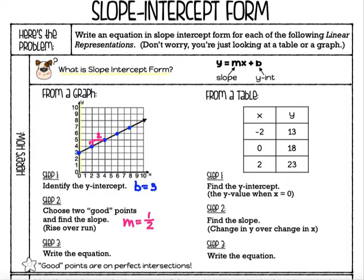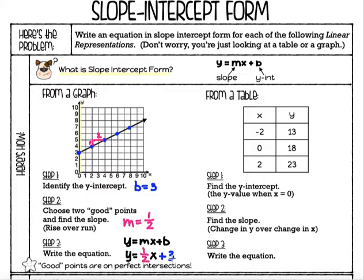The last thing we do is write the equation. We always start with y equals mx plus b. All we're going to do is substitute our values into that equation. So y equals — instead of m, I replace that with our slope, which is one-half — then x stays the same, and I look at my y-intercept, which is positive three, so I write plus three on the end. Our equation in slope-intercept form for this graph is y equals one-half x plus three.